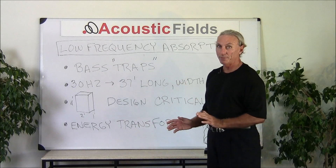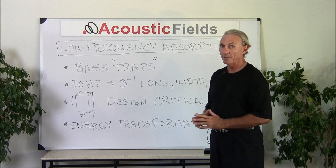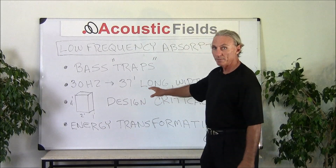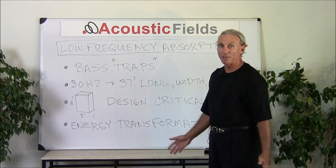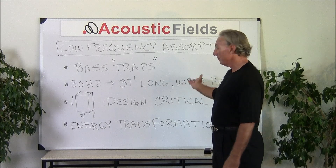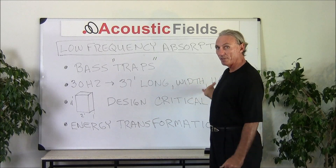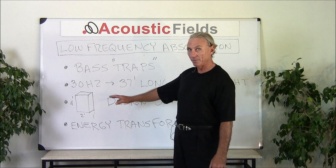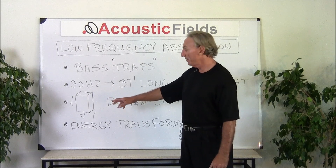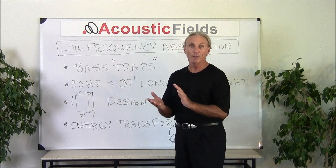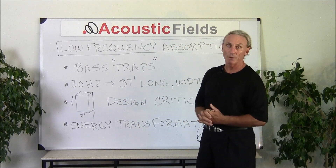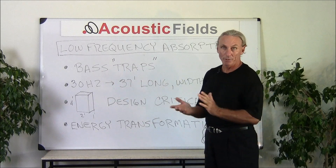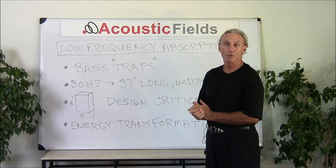Let's observe the process and the mechanics behind it. A 30 Hz wave — a low frequency wave — is approximately 37 feet long, and has a length, width, and height. How are we going to trap that wave with all that energy in an absorber that's 2 foot by 4 foot by 12 inches deep, or 5 foot tall, 3 foot wide, 2 foot deep?